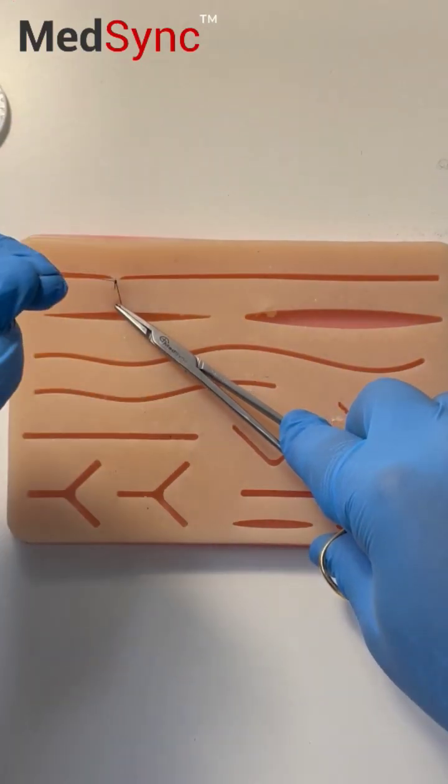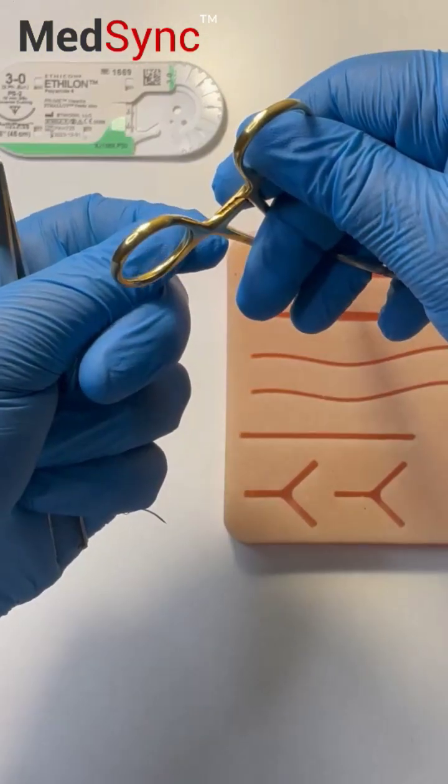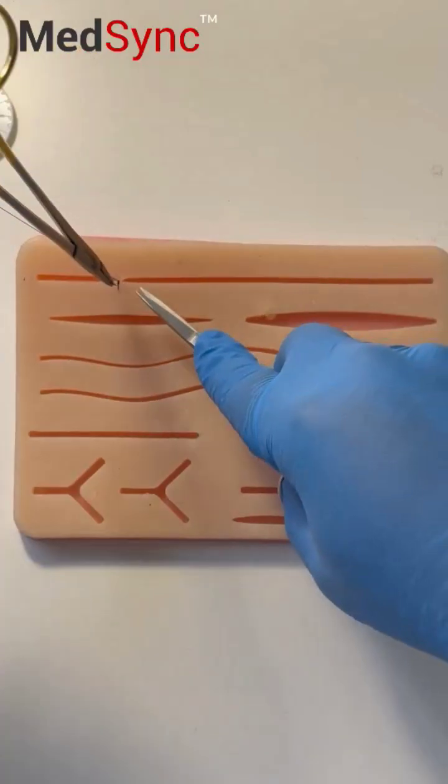Put everything into your left hand. Long suture in my left. Needle holder in my left. Put your finger into the ring. Put your thumb in.